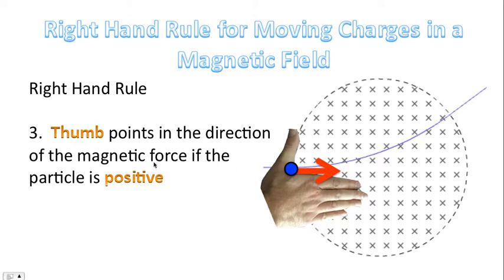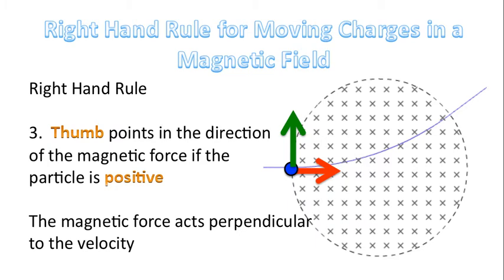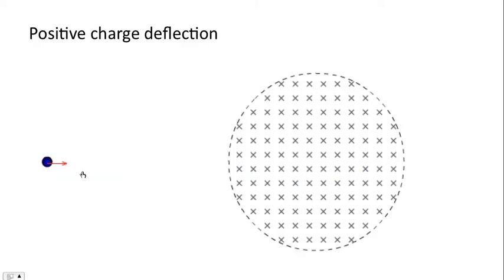Here's part three of the rule. Your thumb points in the direction of the magnetic force if the particle is positive. At the very beginning, we said it was a positive particle, and your thumb points in the direction of the magnetic force. It always acts perpendicular to the velocity. So once again, here's our charged particle — it was positive and it deflects in that direction.